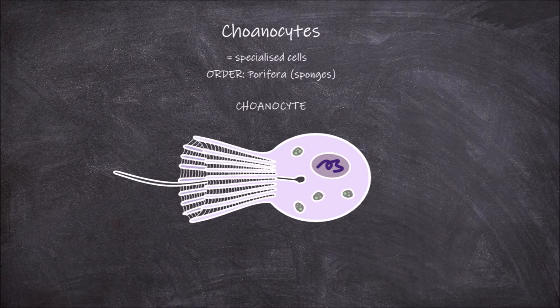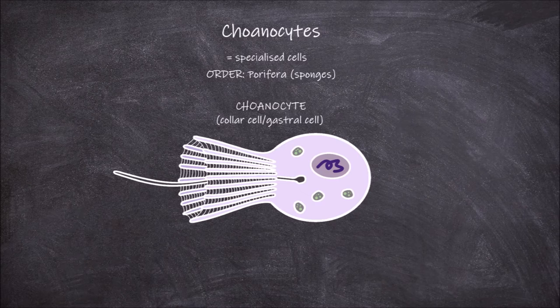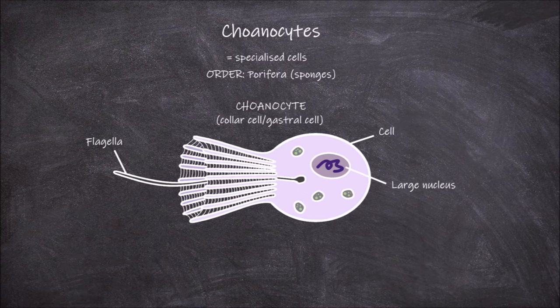Choanocytes, which are also called collar cells or gastral cells, consist of a large round or oval cell. This oval cell has a large single nucleus and a long flagella that extends out one side of the cell body.